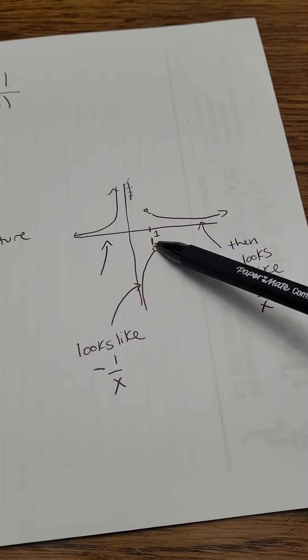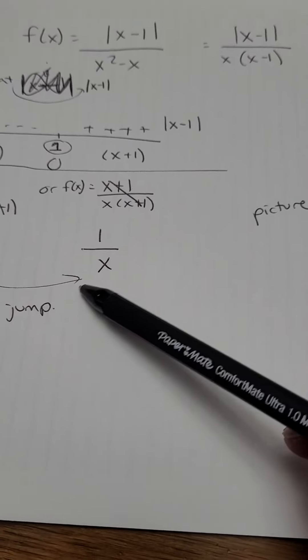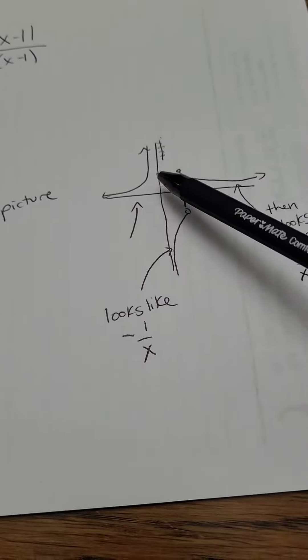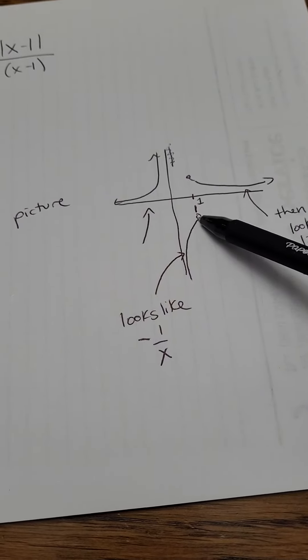Then, at 1, it switches over to look like 1 over x. So it's going to look like this. So from the picture, it's quite clear that that is a jump.